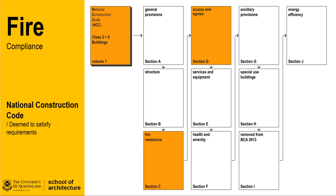For example, a large auditorium will have a high occupancy compared to an office, and therefore the escape requirements such as travel distances and widths would vary accordingly. Various sections of the NCC cover different aspects of the building, but are integrated to provide a holistic approach to fire design.